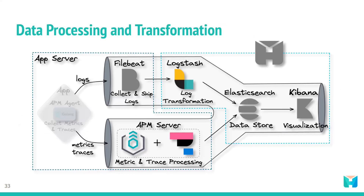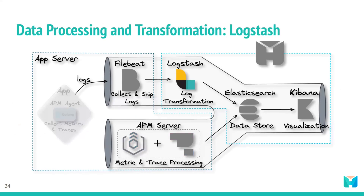Herald uses Logstash for logs and the APM server for traces and metrics. Within the Herald pipeline, Logstash is configured to ingest data from Filebeat. The user must configure Logstash with an appropriate filter that enables a specific transformation of the ingested data to support a specific application use case — for example, a user may use the GeoIP filter to add information about the geographical location of IP addresses. Once the data is processed, it is sent to Elasticsearch for storage and indexing.